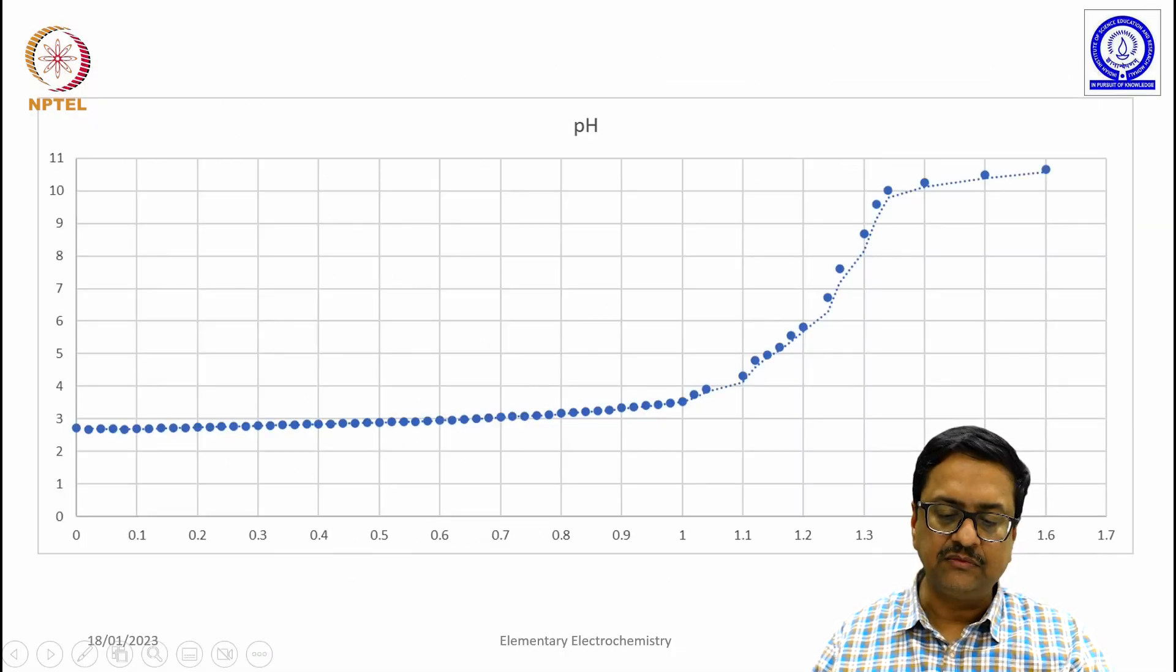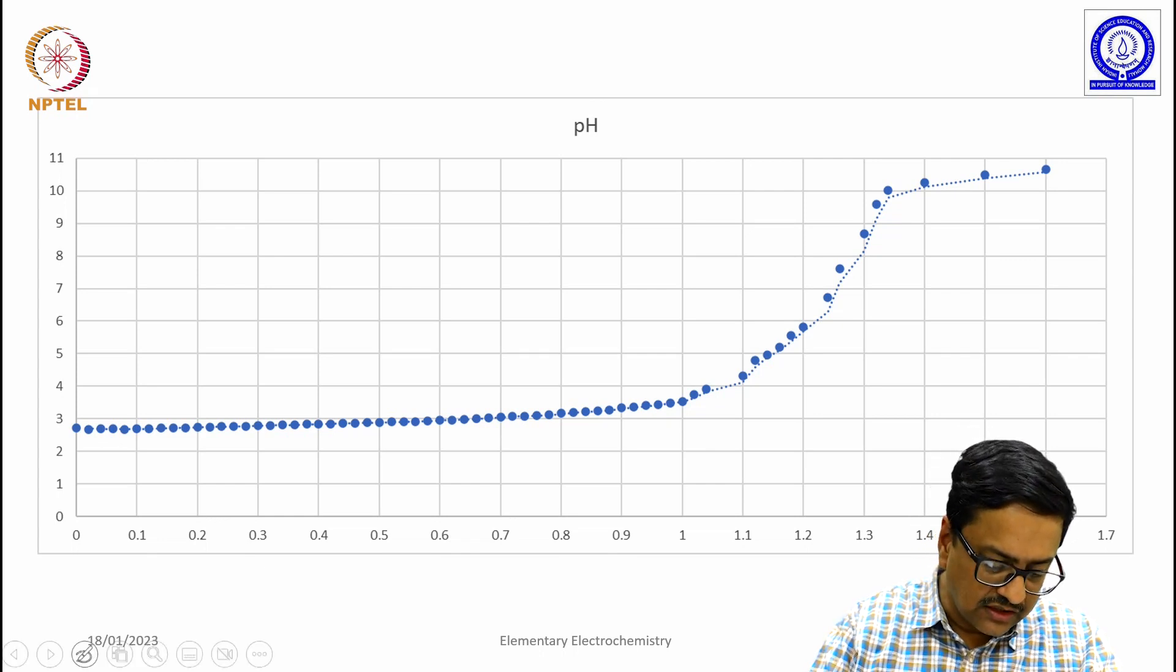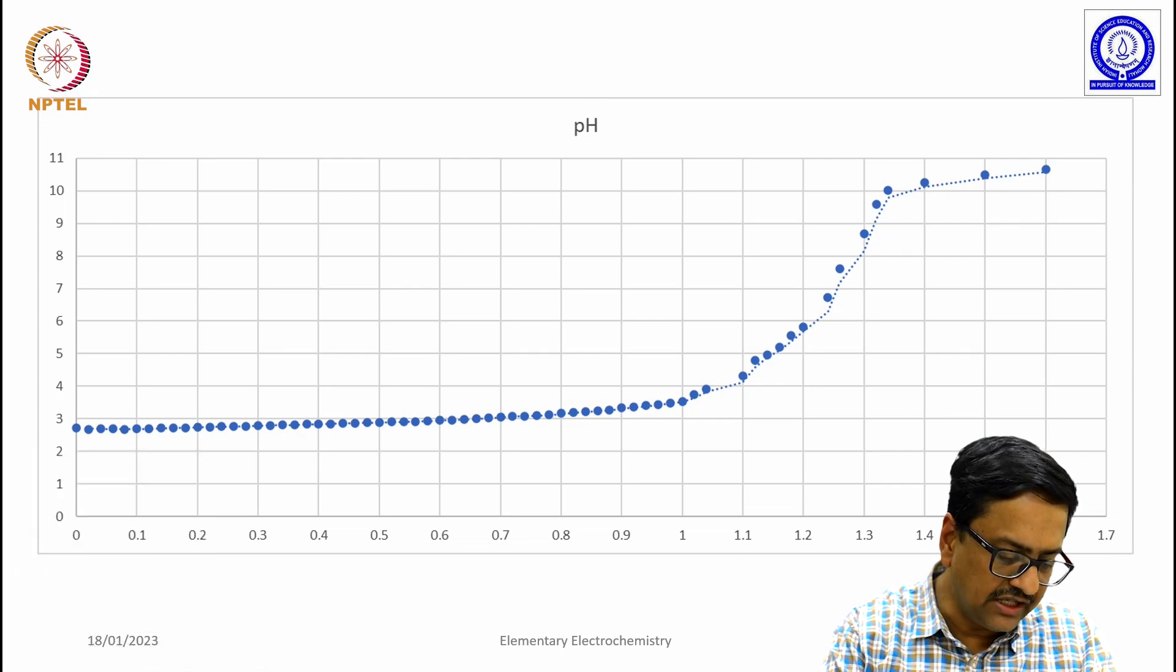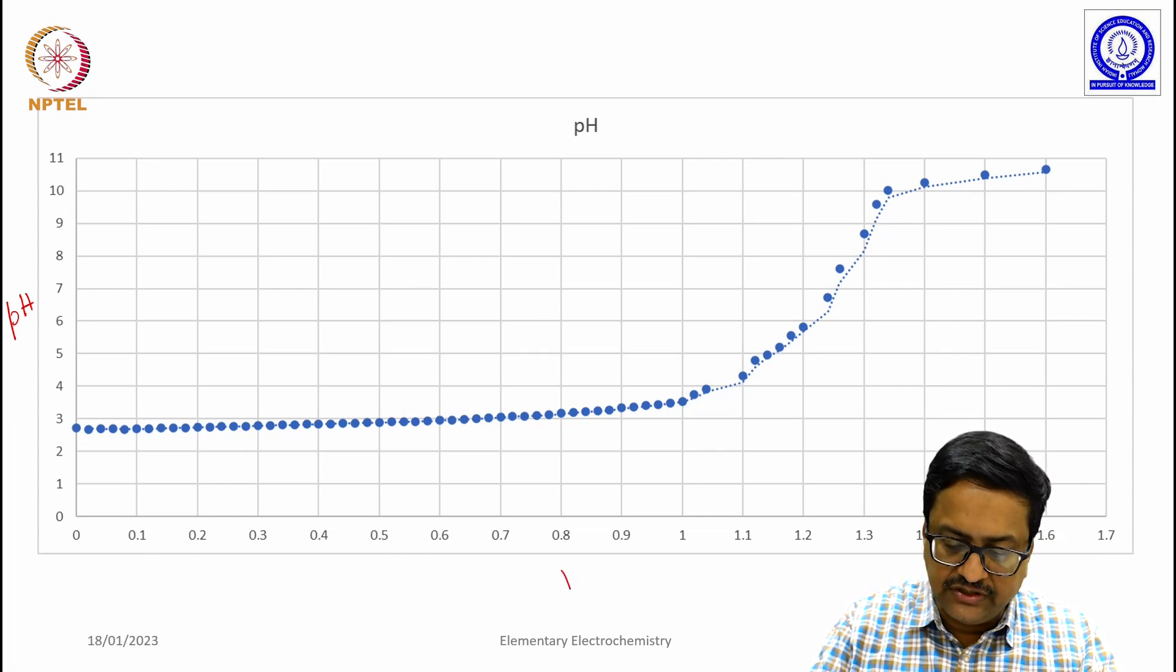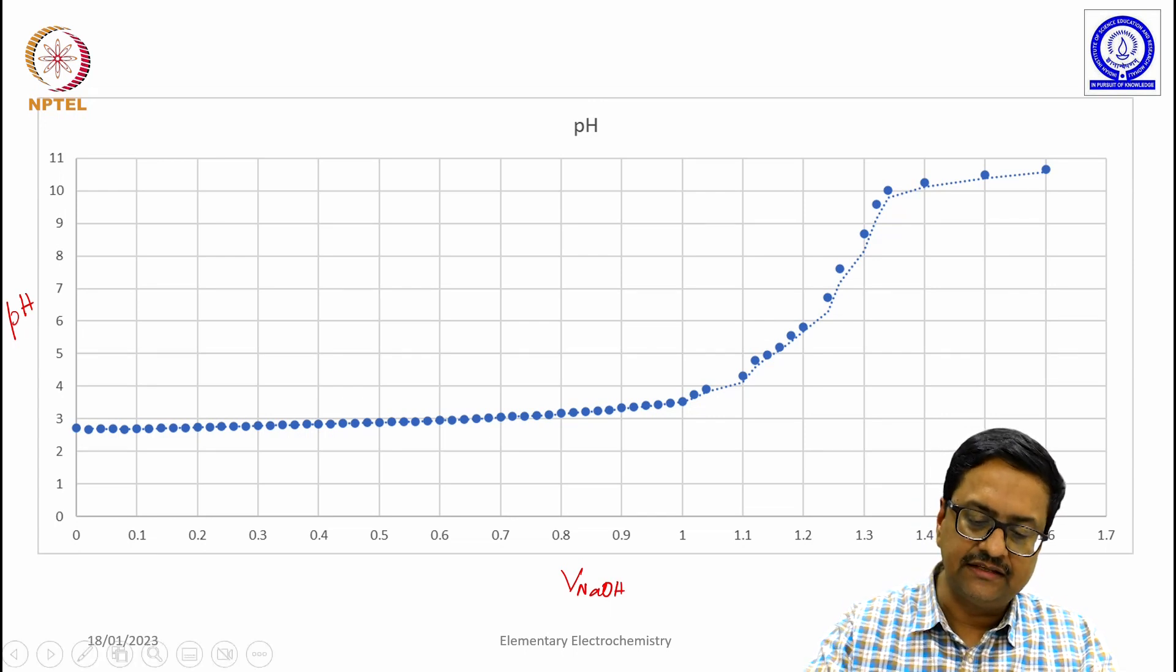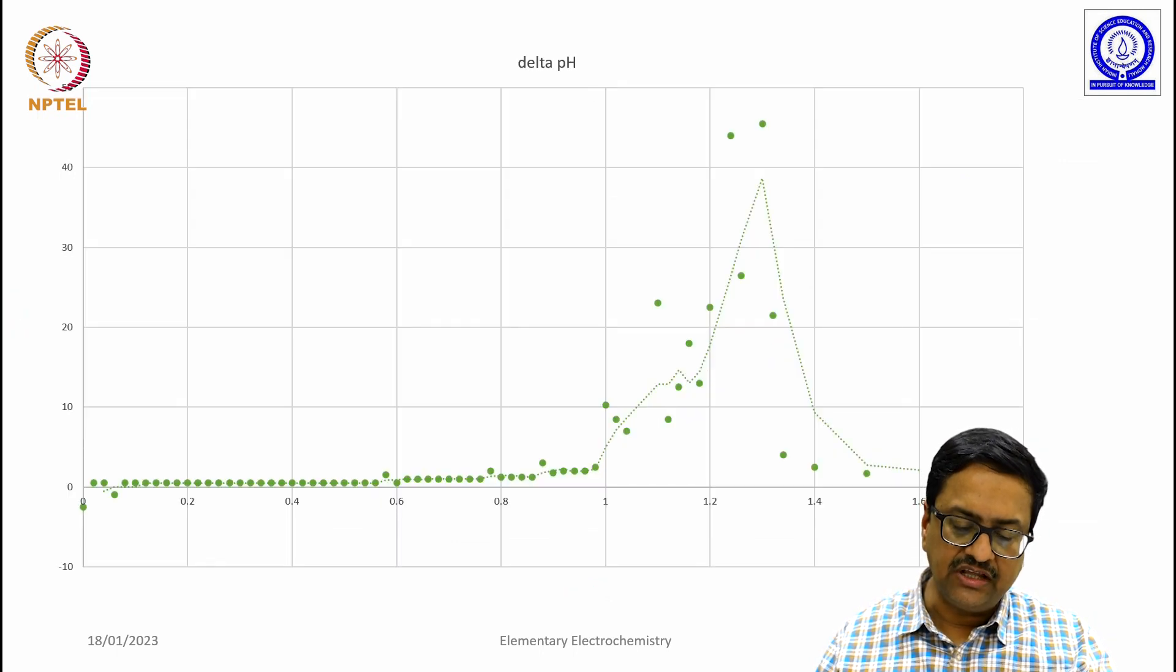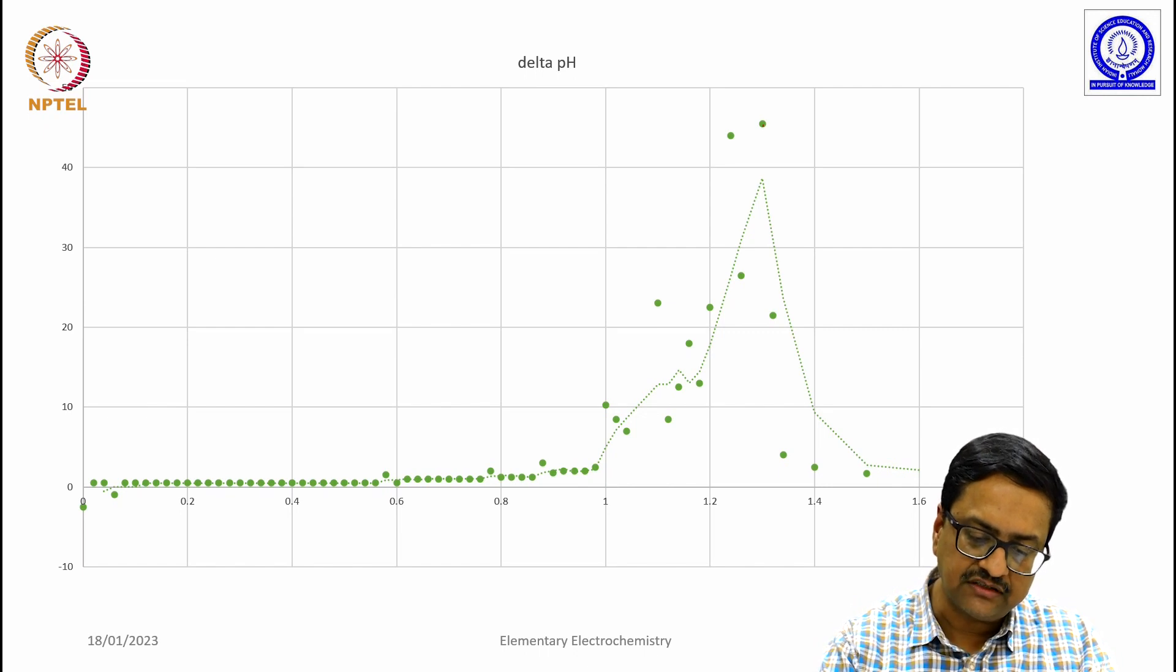So you are going to get a plot like this when we have plotted in y axis the pH and in x axis the volume of NaOH. So you get a slightly S type of curve. And when we plot delta pH versus V NaOH, we see that there is a jump here.